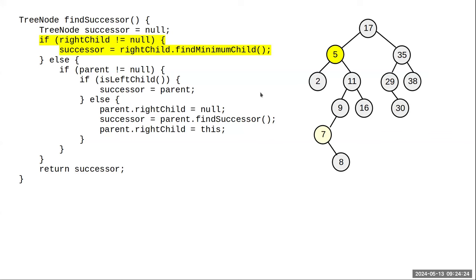What if there is no right child, like node two? Ask: is this a left child? Yes — which means the parent is the one that comes right after it. Since there's nothing to the right, there's nothing larger there. Because it's a left child, it is smaller than its parent, so the parent is the successor. Those are two fairly direct cases.